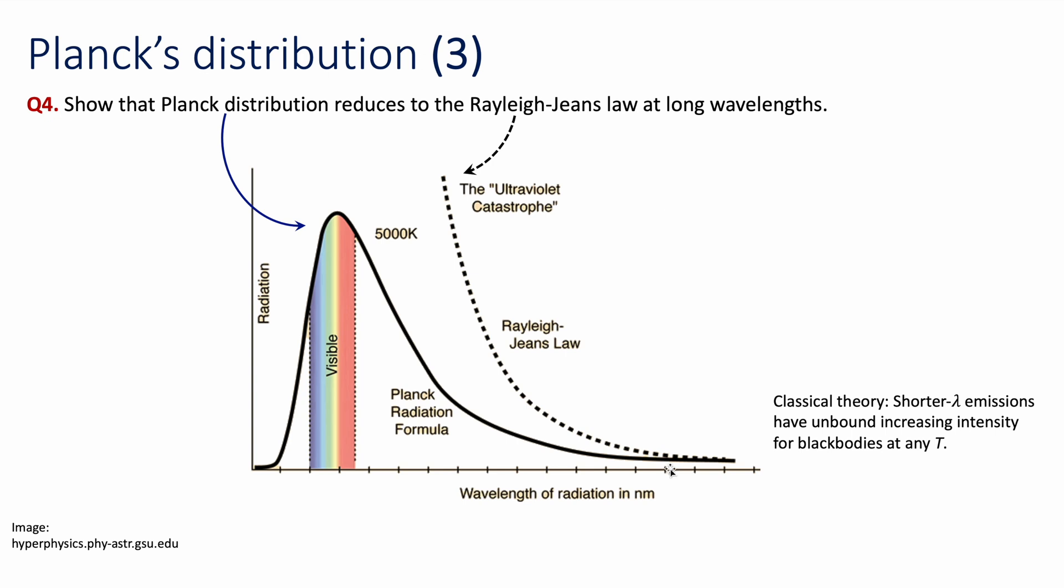In particular, we're going to look today in this video at its behavior at long wavelengths. You may remember from classical physics that Rayleigh-Jeans law worked at long wavelengths, but it failed at shorter wavelengths in what was known as the ultraviolet catastrophe.